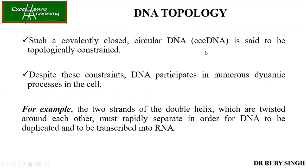Such a structure is called covalently closed circular DNA (CCC DNA), and it is said to be topologically constrained — meaning it is very tight and you cannot do anything about it. This is seen mainly in bacteria, for example in plasmids. Most plasmids are circular, closed, and covalently attached, meaning there is a phosphodiester bond and no free ends.